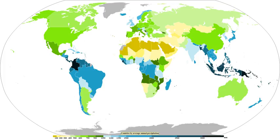Stratus is a stable cloud deck which tends to form when a cool, stable air mass is trapped underneath a warm air mass. It can also form due to the lifting of advection fog during breezy conditions. There are four main mechanisms for cooling the air to its dew point.